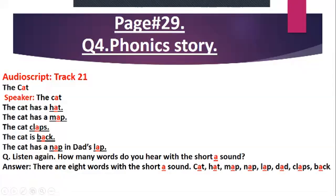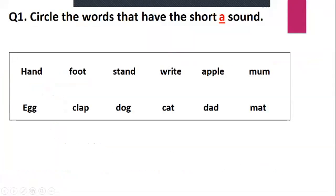Here is a question for you: circle the words that have the short A sound. The words are: hand, foot, stand, right, apple, mum, egg, clap, dog, cat, dad, mat. For example, hand has the A sound, so you will circle this word. Check carefully and recognize the A sound, then circle those words.